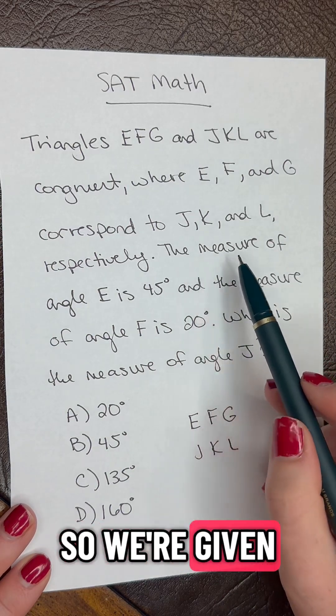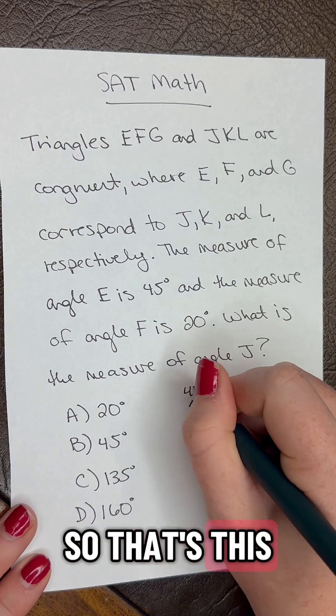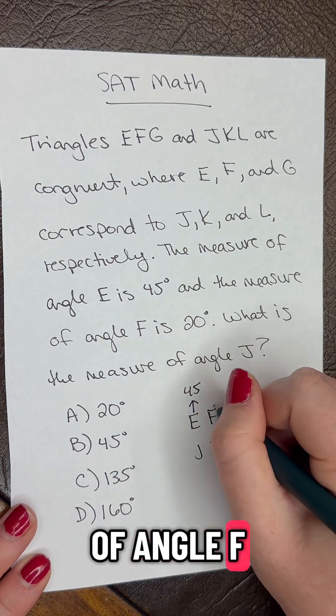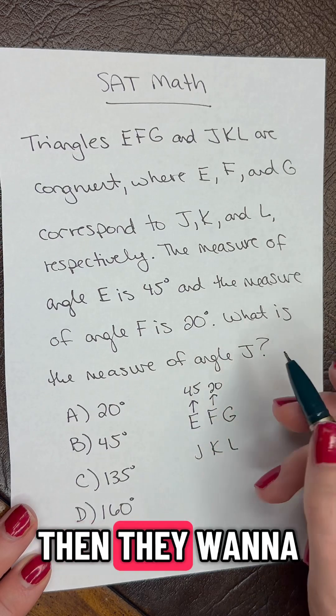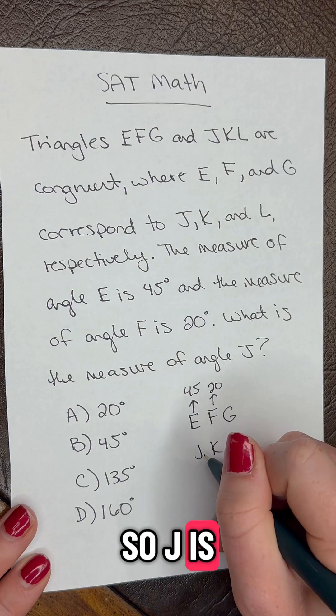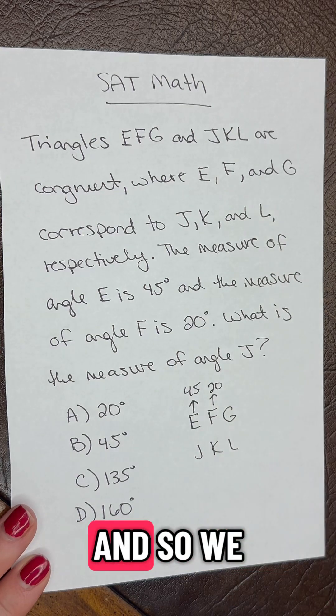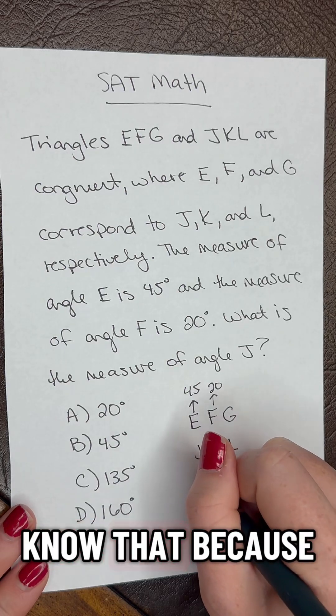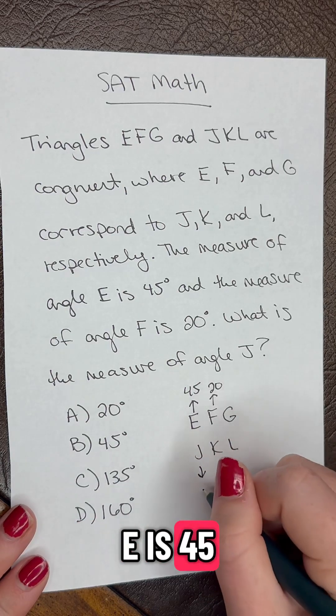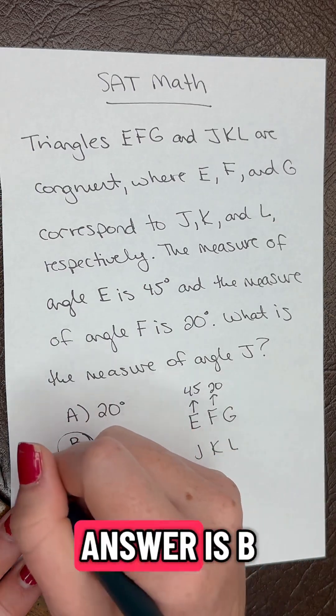Let's write down what we're given. So we're given that the measure of angle E is 45. That's this one. The measure of angle F is 20. Then they want to know what is the measure of angle J? So J is going to be similar to E here. And so we know that because E is 45, J is also going to be 45. So our answer is B.